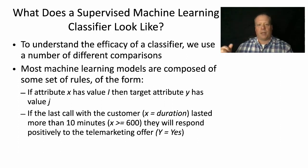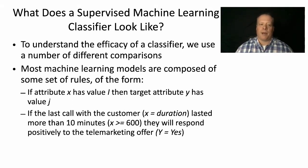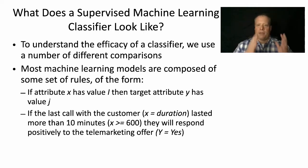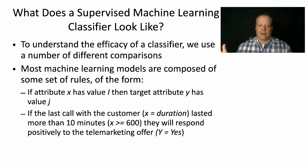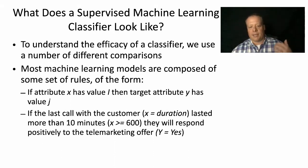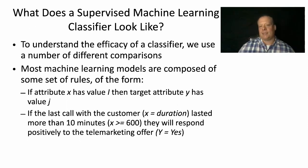Before we get into details, I want to talk a little bit about how to measure whether or not you have a good model. To understand the efficacy of a classifier, we want to use a number of different ways of looking at that model. One simple way to think of it is that almost all machine learning models are essentially composed of some set of rules of the form: if attribute X has value I, then target attribute Y has value J. For instance, if the last call with customer X lasted more than 10 minutes (X >= 600), they will respond positively to the telemarketing offer (Y = yes).